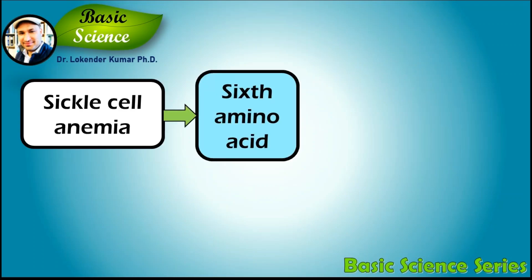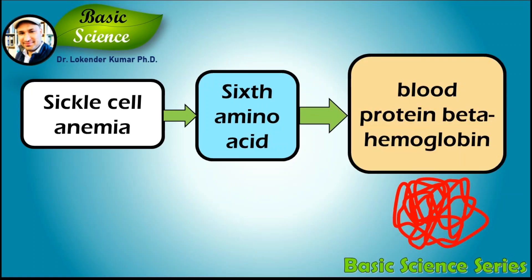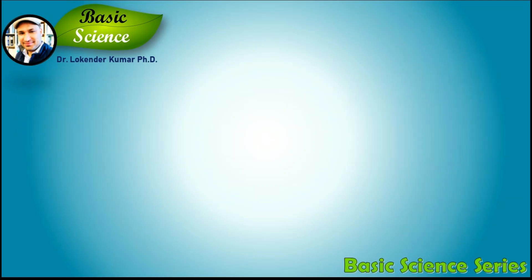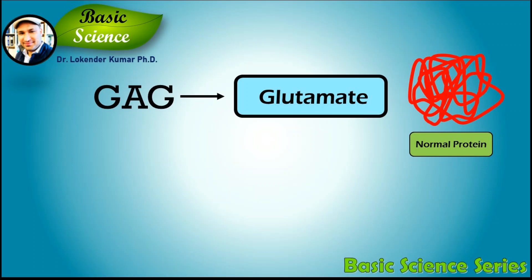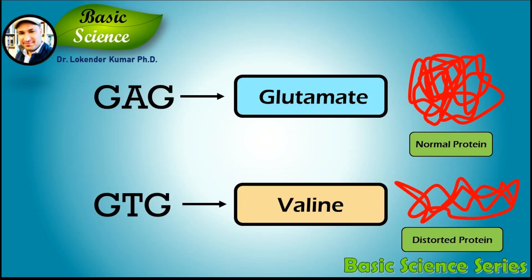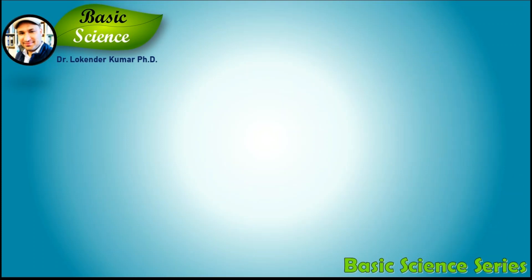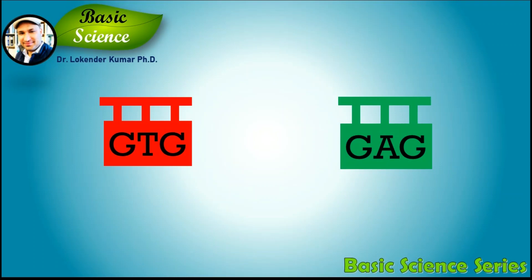The human disease sickle cell anemia is caused by a genetic mutation in the codon for the sixth amino acid of the blood protein beta-hemoglobin. The normal DNA sequence GAG codes for the amino acid glutamate, while the mutation changes the middle adenine to thymine, leading to the sequence GTG.